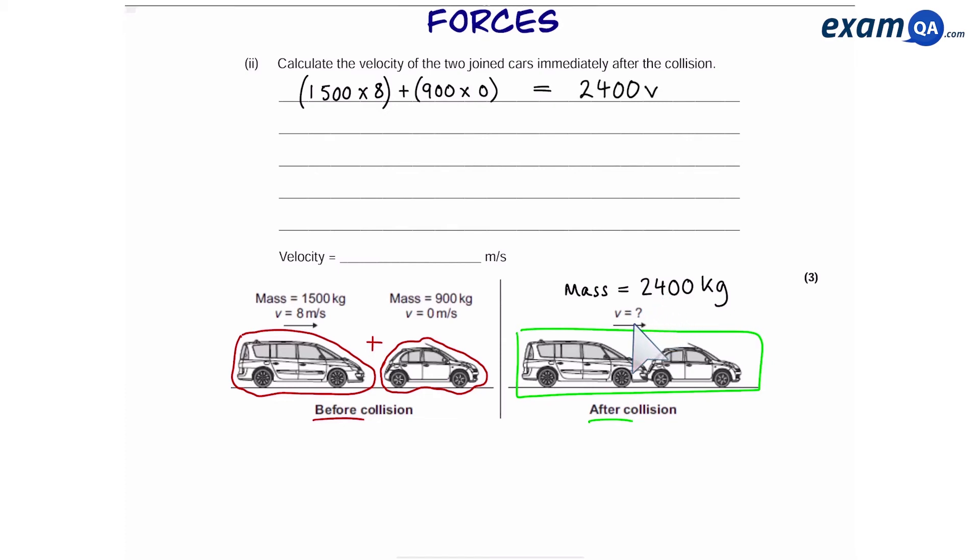However, we don't know the velocity. So all we're going to say is 2400 times V. So that's the momentum before equals momentum after. Now, all we have to do is work out V. So simplifying this gives us 12,000 on the left. Next, we're going to divide both sides by 2400, and that gives us velocity.